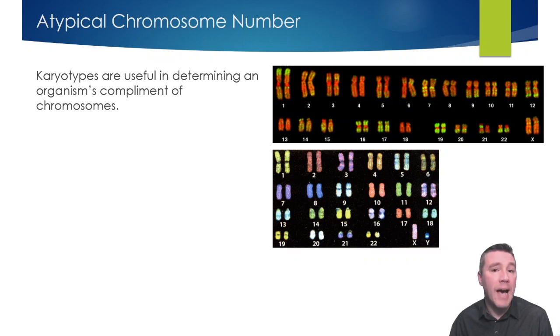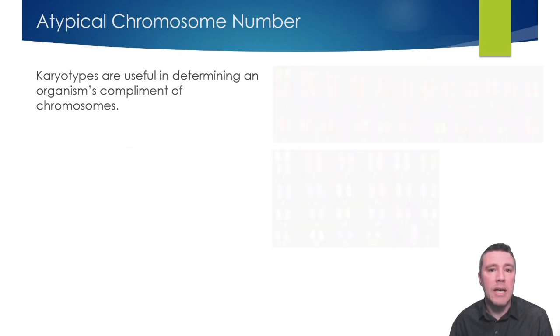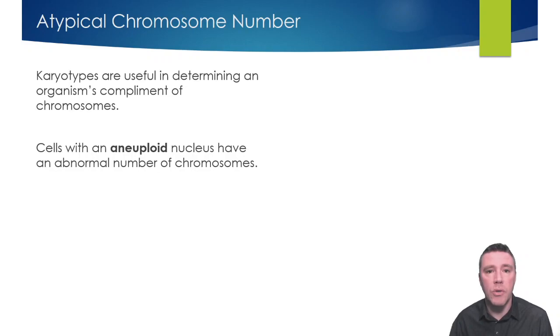When cells have an abnormal number of chromosomes, aneuploidy is the result. And remember, if a zygote, the single cell we all started out as, is aneuploid, every cell of the organism that develops from it is also aneuploid.